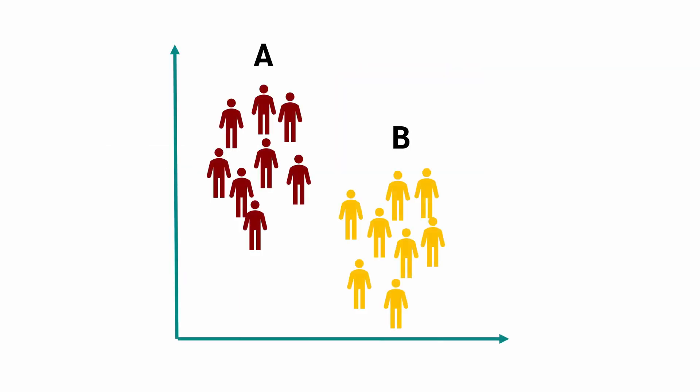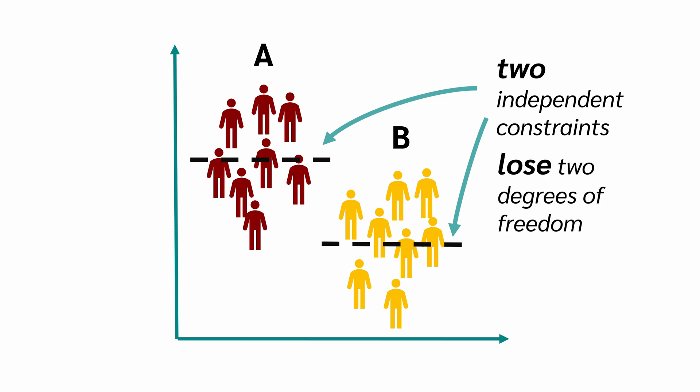So, in this case, we have two groups and we calculate the mean of both samples. We have two independent constraints and because of these two constraints, we lose two degrees of freedom.